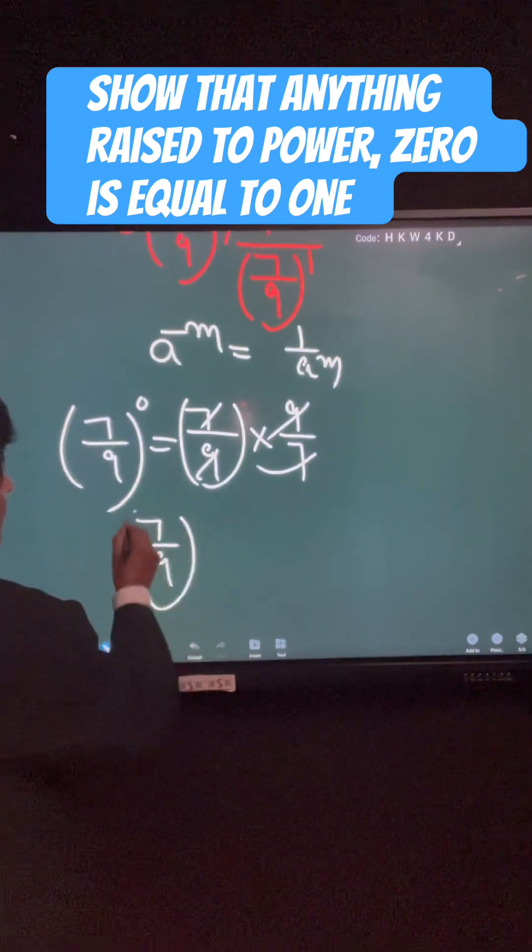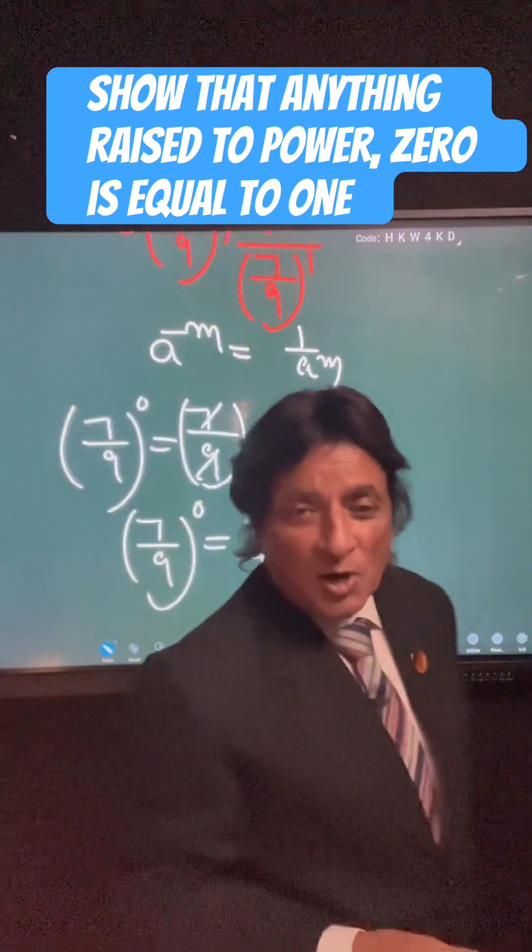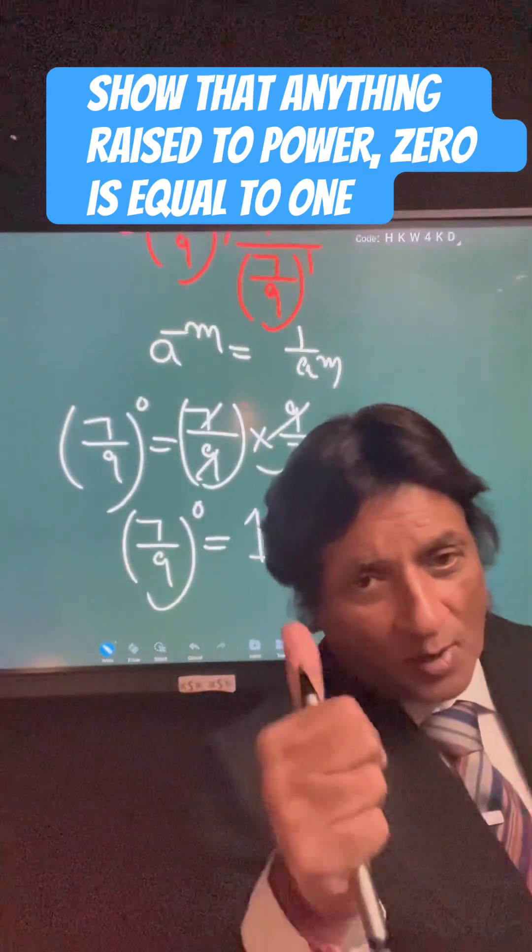So 7 upon 9, anything raised to power 0 is equal to 1. You can apply this technique to any concept. Thank you.